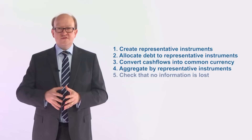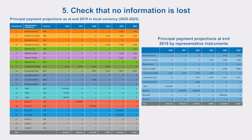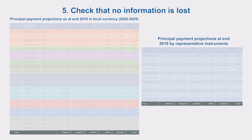Step 5: we check that no information is lost. By comparing the total principal payments for each year, you will note that information is not lost. It is highly recommended that the user undertake such checks — confirming that the total principal payments using representative instruments is the same as the sum of total principal payments for individual debt instruments. Similar aggregation needs to be undertaken for interest payments on an annual basis.